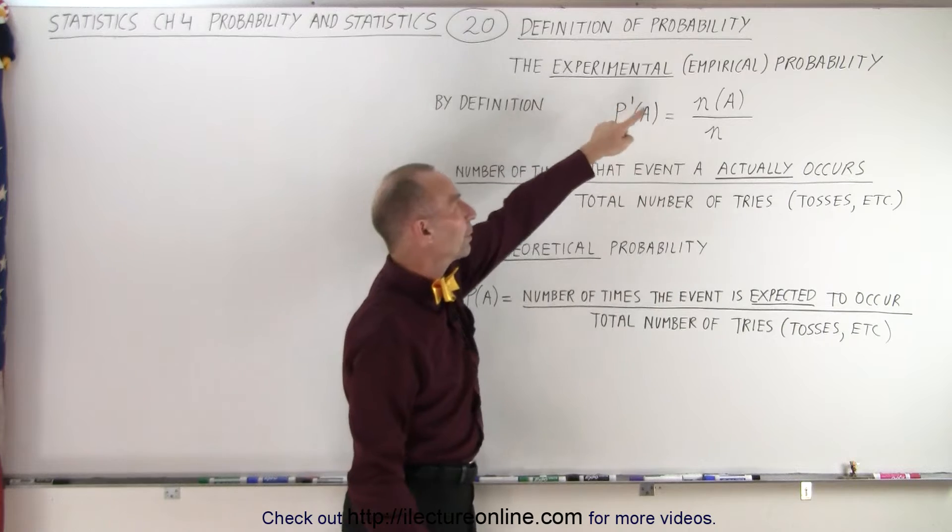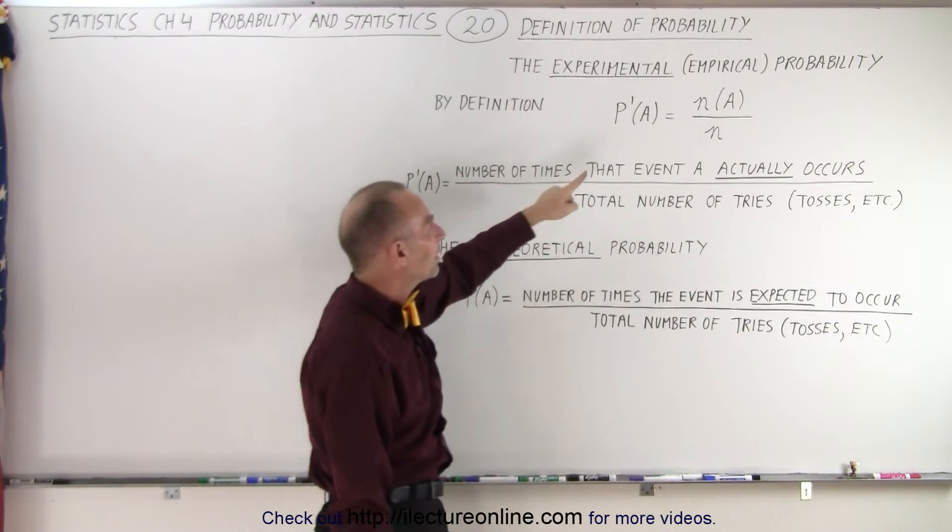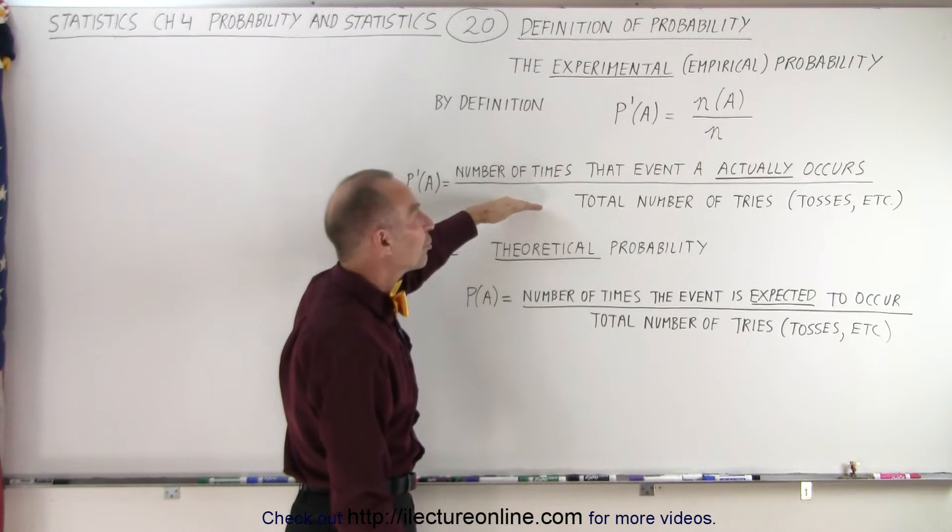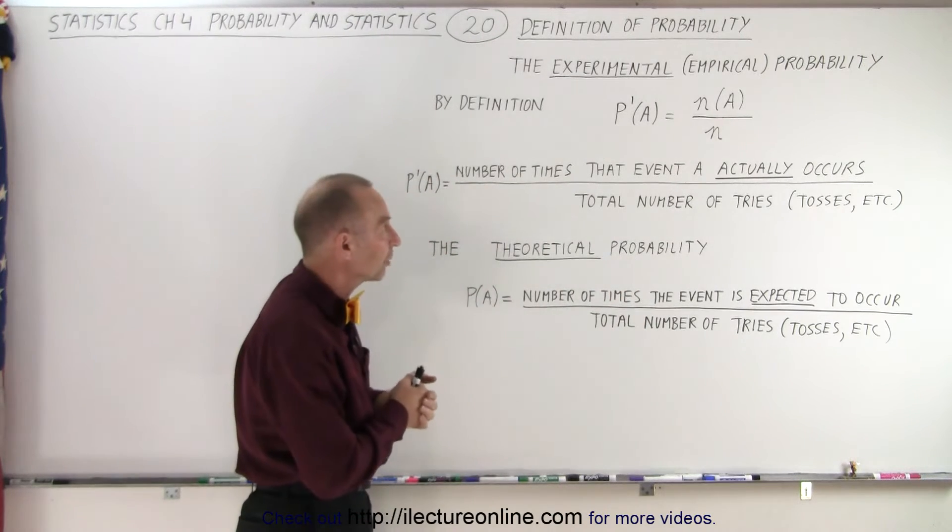the experimental or empirical probability is equal to the number of times that the event A actually occurs, divided by the total number of tries, tosses, and so forth, the number of times we actually perform the experiment.